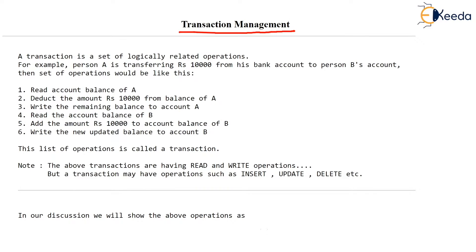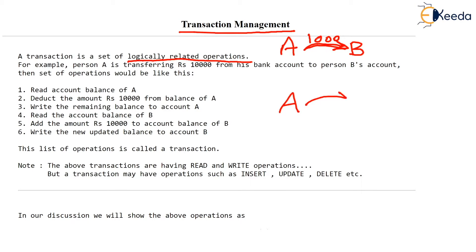First of all, what do you mean by transaction? A transaction, as the word suggests, is basically a set of logically related operations. You can think of a transaction like person A transferring some money to the account of person B in a bank, or person A booking a ticket on IRCTC, the online railway reservation system, contacting the database and booking a ticket for a particular day, train, and bogey. Any such kind of logically related operation is called a transaction.